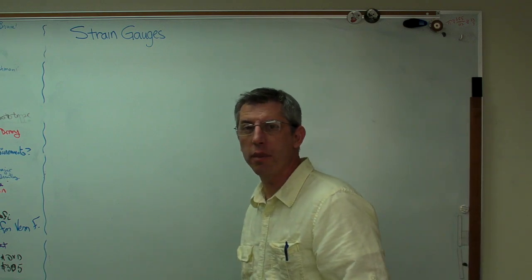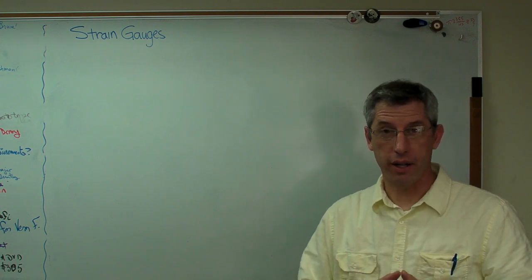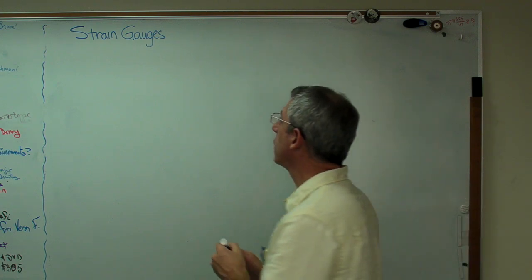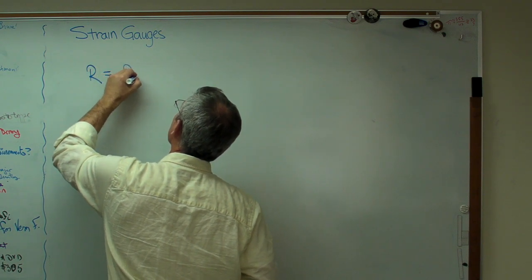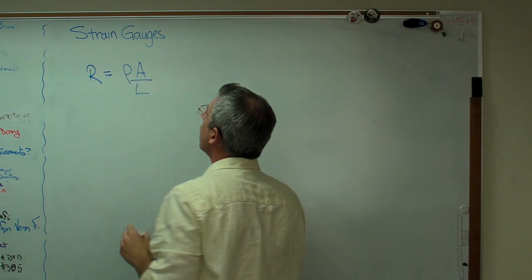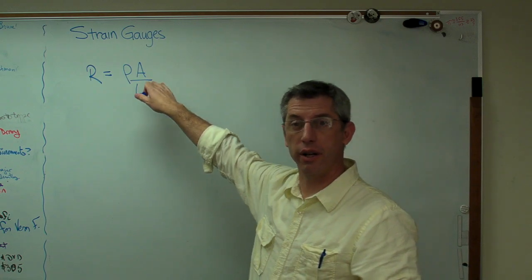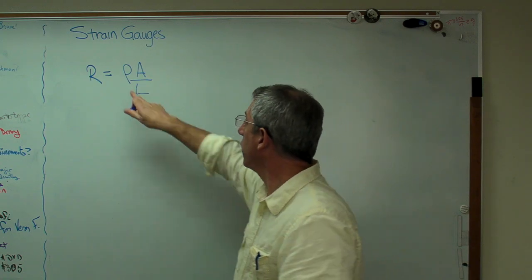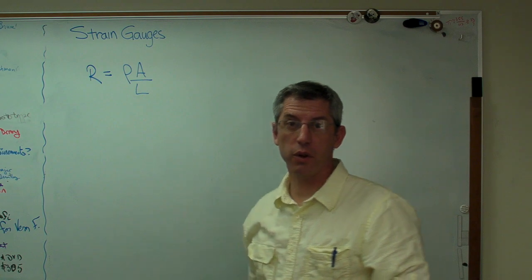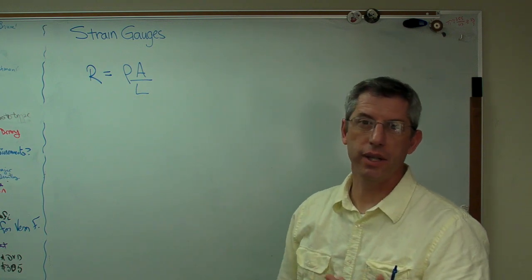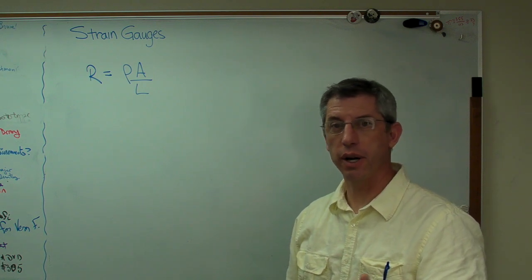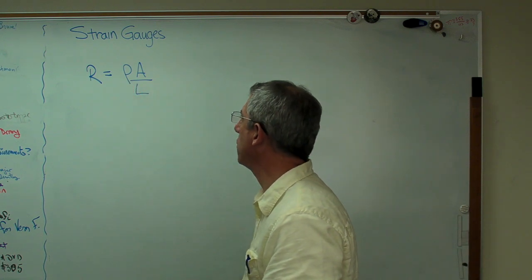What I'd like to start by doing is talking about how you calculate the resistance of a wire. The expression for resistance of a wire, R, is ρA over L, where A is the cross-sectional area and L is the length. And ρ is a material property. It's called resistivity, and you look this up just as you would density or elastic modulus or yield stress. It's just a property of the material.